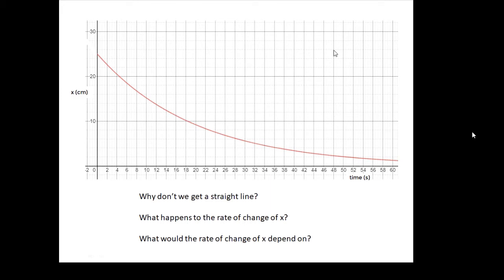Why don't we get a straight line? What happens to the rate of change of x, which is dx/dt, the rate of change of x? In other words, the gradient of the graph. And what would the rate of change of x depend on? Very quickly answering those questions. Why don't we get a straight line?